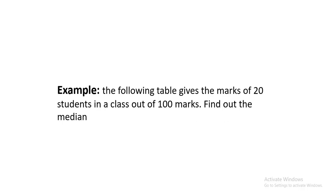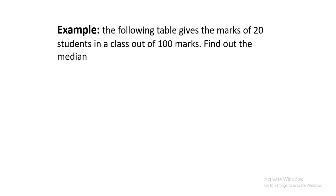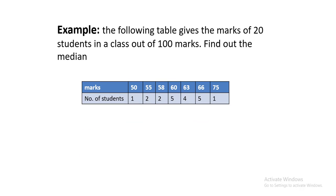Now let's look at another example. The following table gives the marks of 20 students in a class out of 100 marks. Find out the median. This is a simple frequency distribution table. The marks are 50, 55, 58, 60, 63, 65, and 75, and these are the number of students who scored these marks.